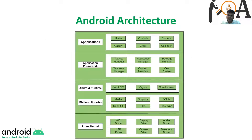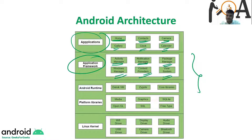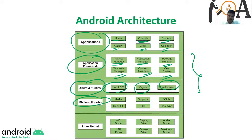Here you can see the Android architecture. At the uppermost layer we have the Application component, which includes Home, Contacts, Camera, Gallery, Clock, and Calendar. Below that is the Application Framework, which includes Activity Manager, Notification Manager, Package Manager, Windows Manager, Content Providers, and View Systems. Below that is Android Runtime, which contains Dalvik VM, ART, and Core Libraries.